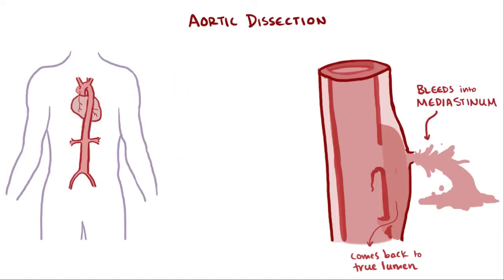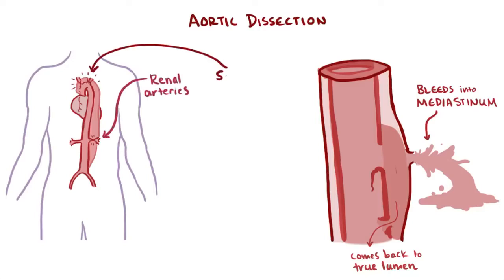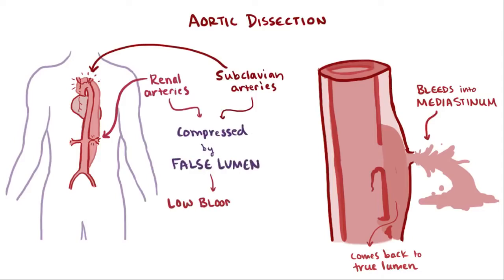Yet another possibility is the blood could continue to tunnel between the tunica intima and the tunica media until it reaches another artery that branches off the aorta, like the renal arteries or the subclavian arteries. The blood in the false lumen can put pressure on these branching arteries, decreasing blood flow to the kidneys and arms, causing a whole new mess to deal with.